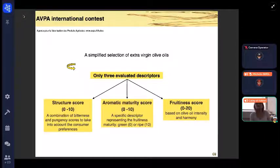This competition differs from the others because the selection of olive oil is simplified. Only three descriptors are evaluated by expert testers to classify olive oil samples based on three scores. The first is a structure score, which is a combination of bitterness and pungency to consider consumer preferences.